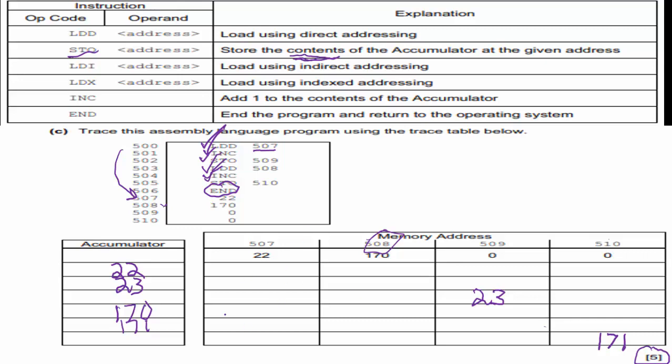This one worked out nicely because they gave us just the right number of rows. Sometimes they will, sometimes they will not. If you have rows left over, that doesn't necessarily mean you did anything wrong. But that's an easy way to pick up five points.